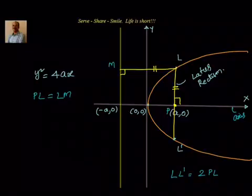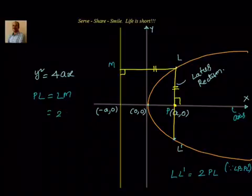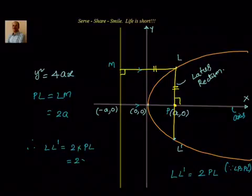Because the parabola is symmetric about the x-axis, LP = PL'. Therefore LL' = 2PL. Now, PL = LM, and LM = 2a, because the distance from −a to a is 2a (these are parallel lines). Therefore, LL' = 2 × PL = 2 × 2a = 4a. So, the length of the latus rectum is 4a.